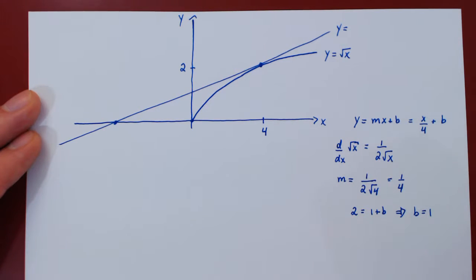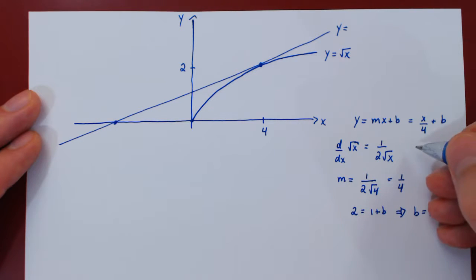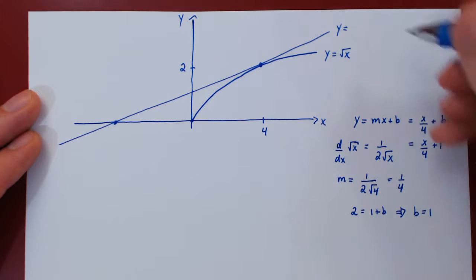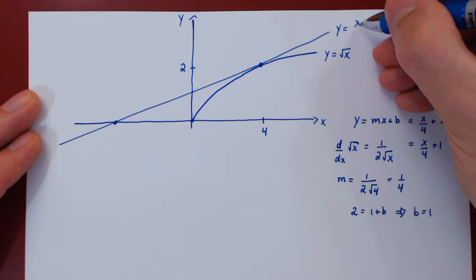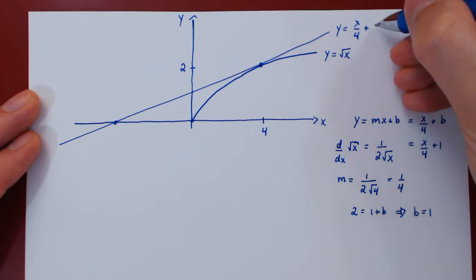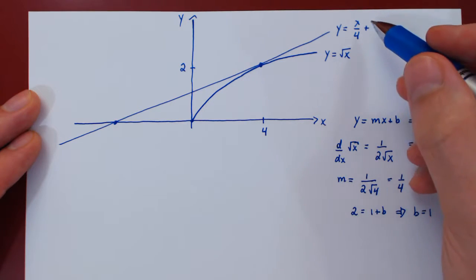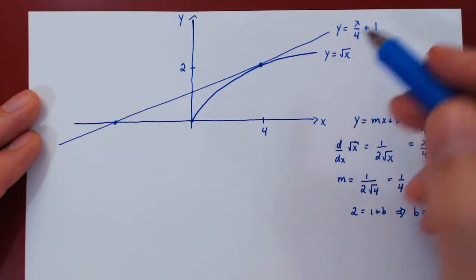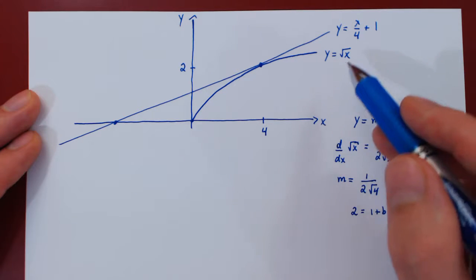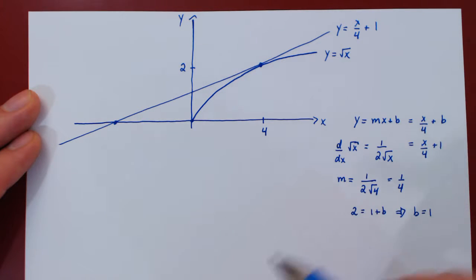So b equals 1. We now have the equation of our tangent line: y equals x over 4 plus 1. Now we have the tangent line and the original curve, so we're good to go.